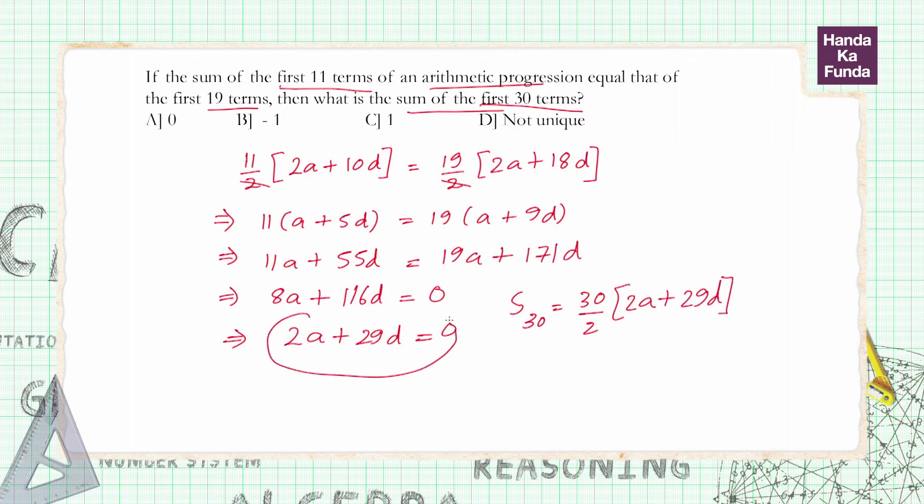We have already found out that 2A plus 29D is 0 which essentially means that sum of 30 terms 0 multiplied with anything is 0. And hence sum of 30 terms is also 0. And that is given to us as option A.